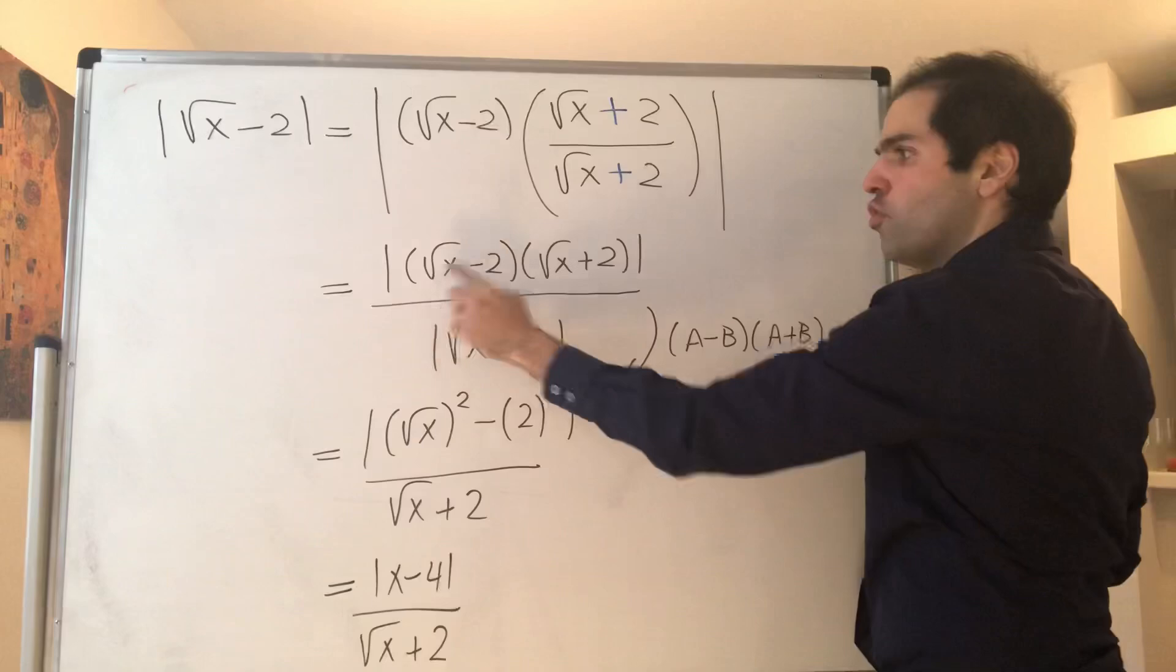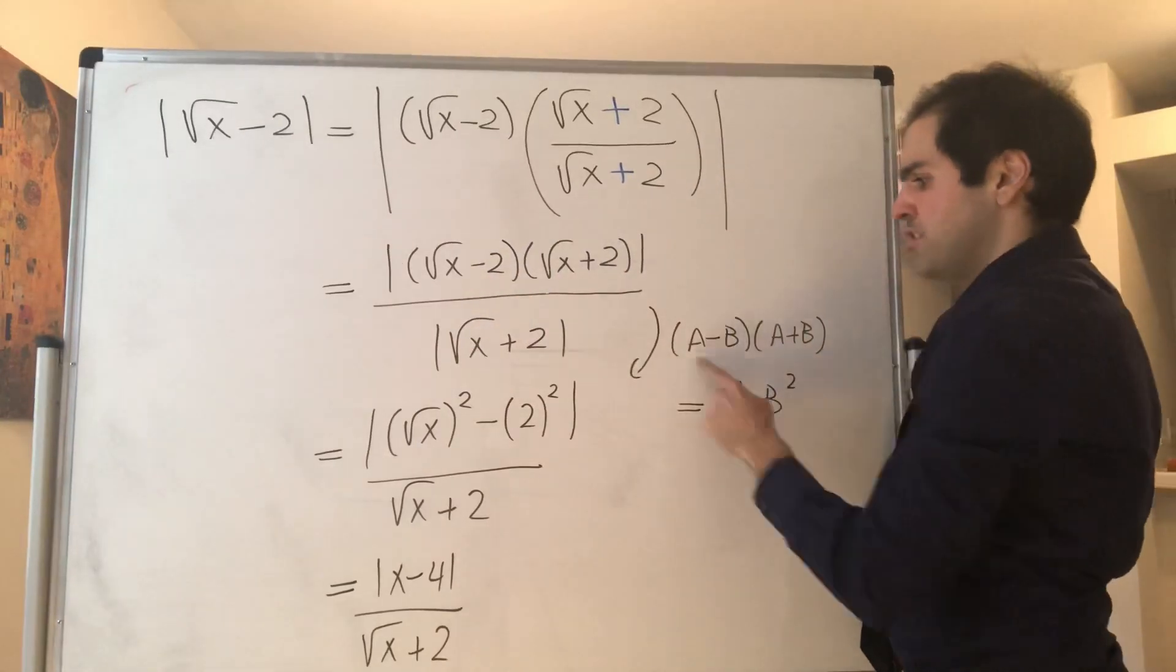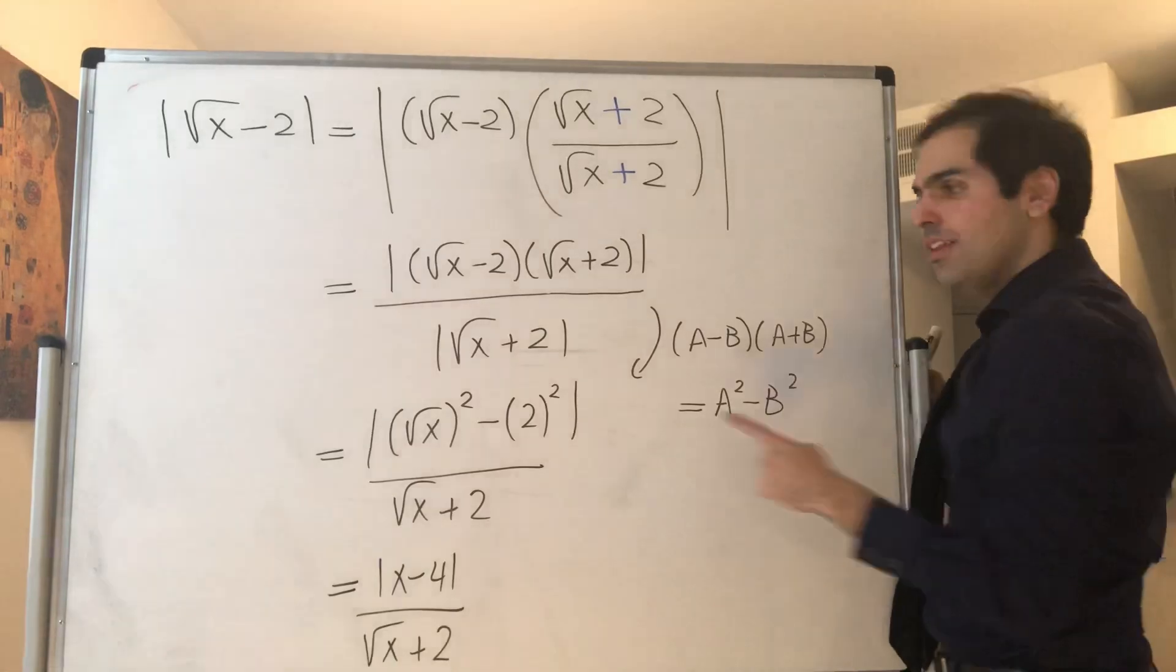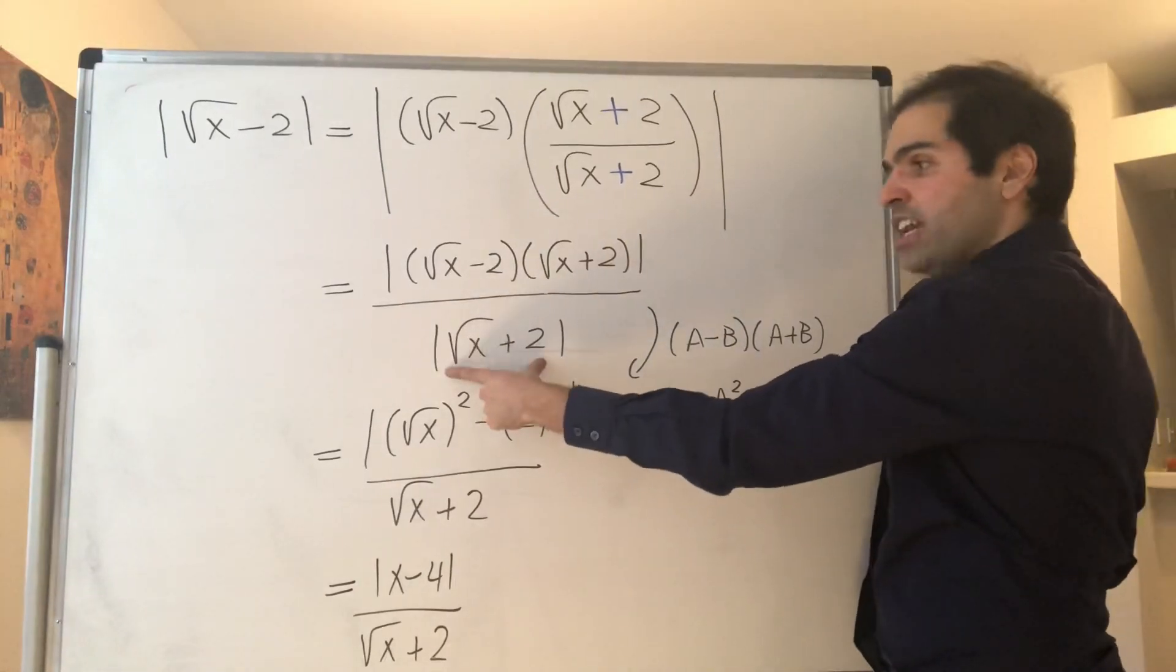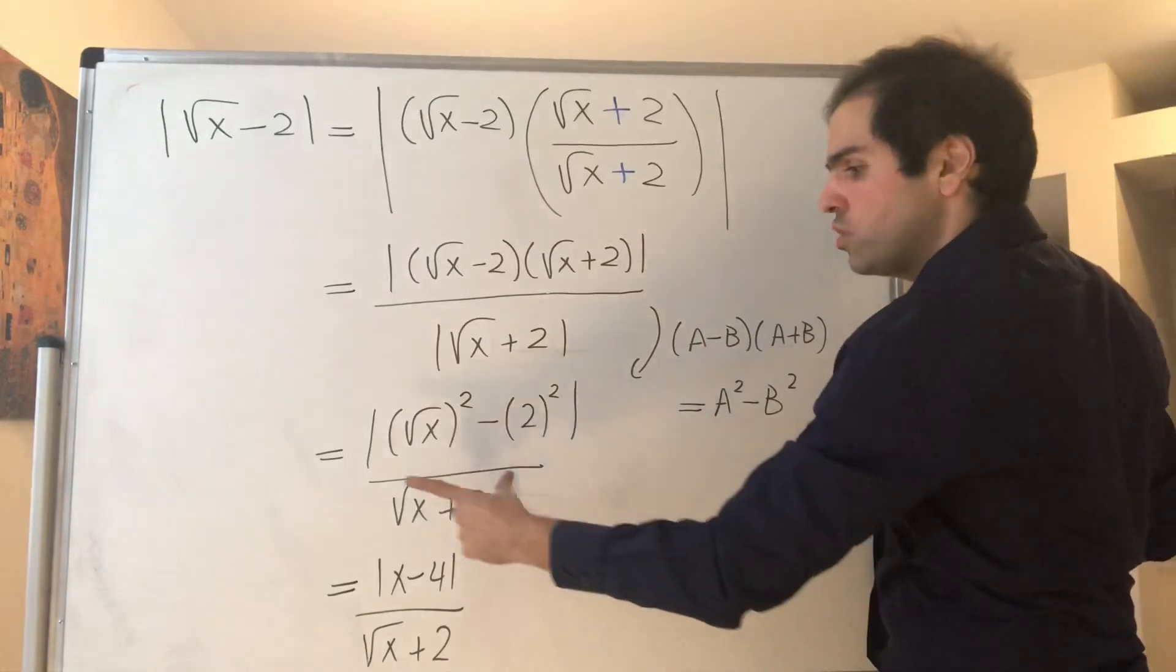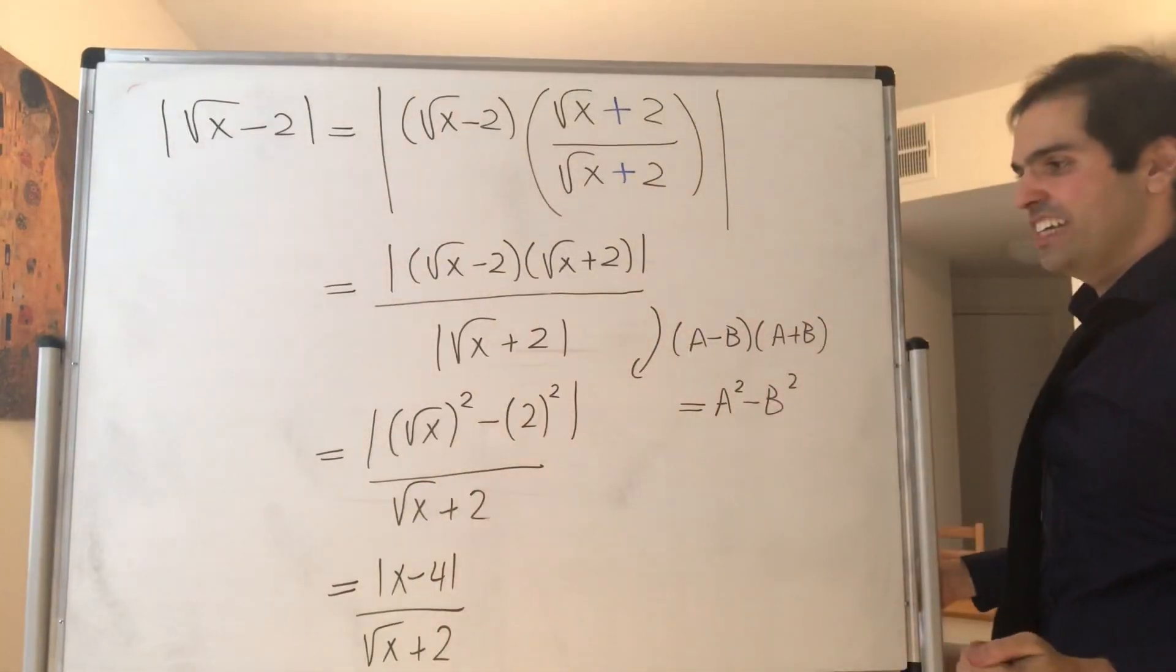Now, notice this is of the form a minus b times a plus b, which is just a squared minus b squared. Whereas, the denominator is positive. It is bigger than or equal to 2. So, in fact, we can remove the absolute value here.